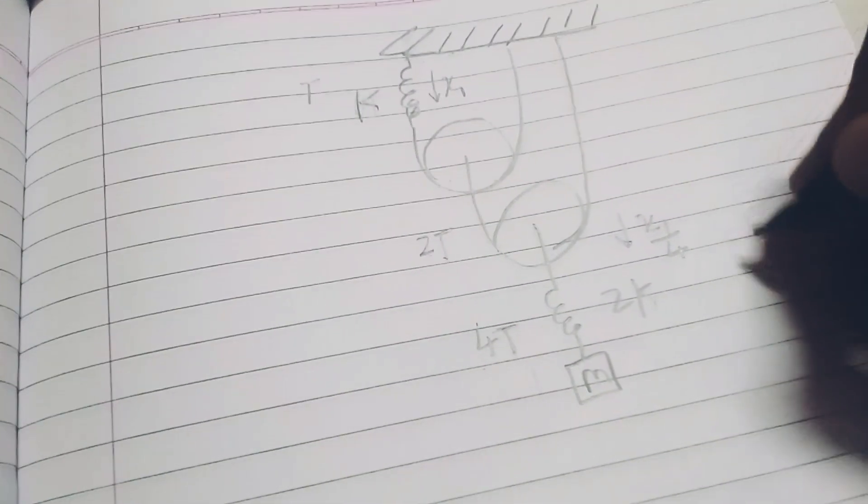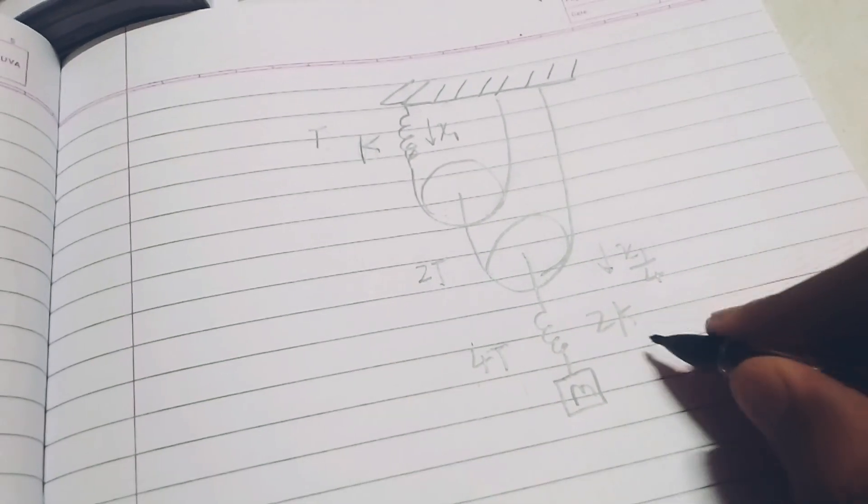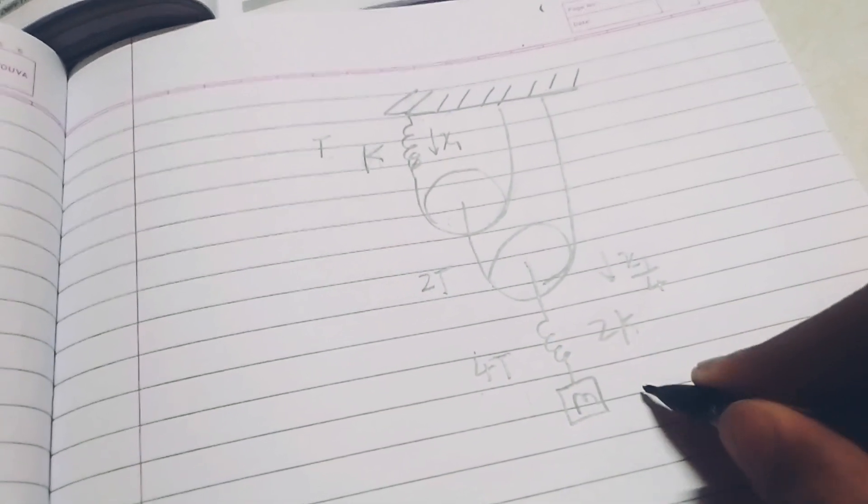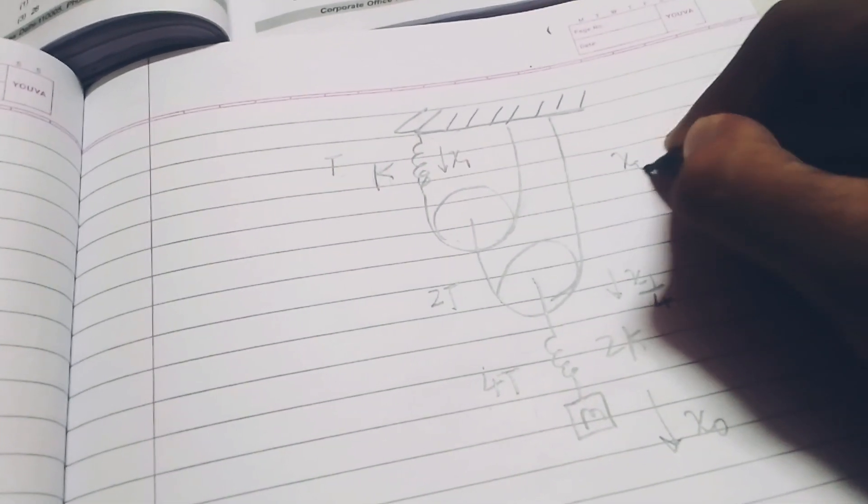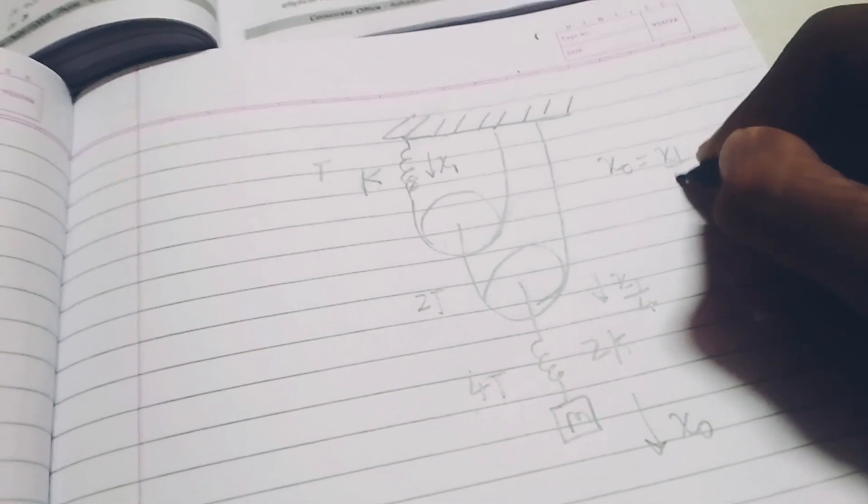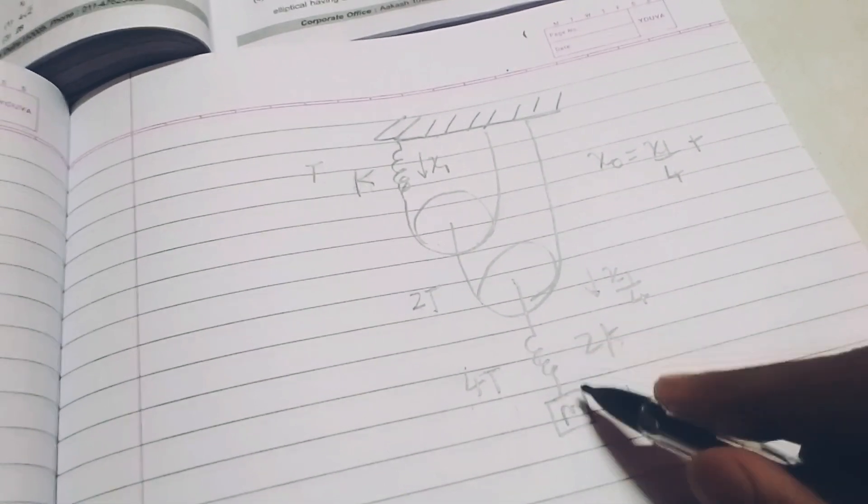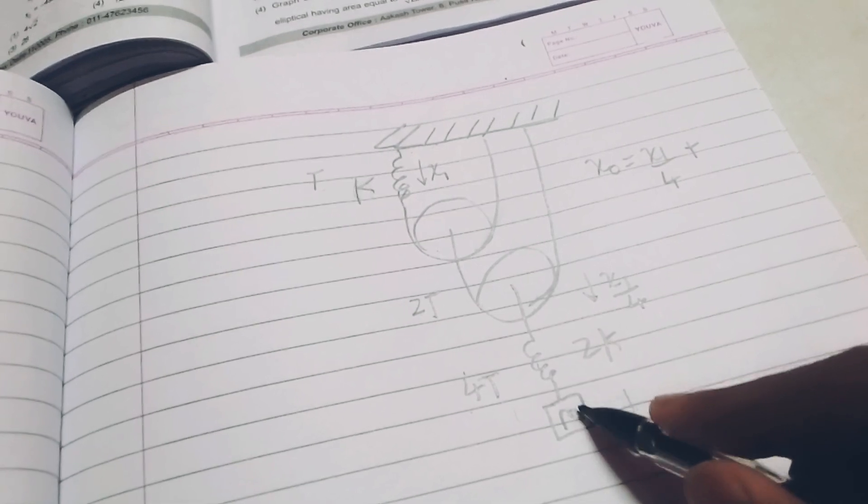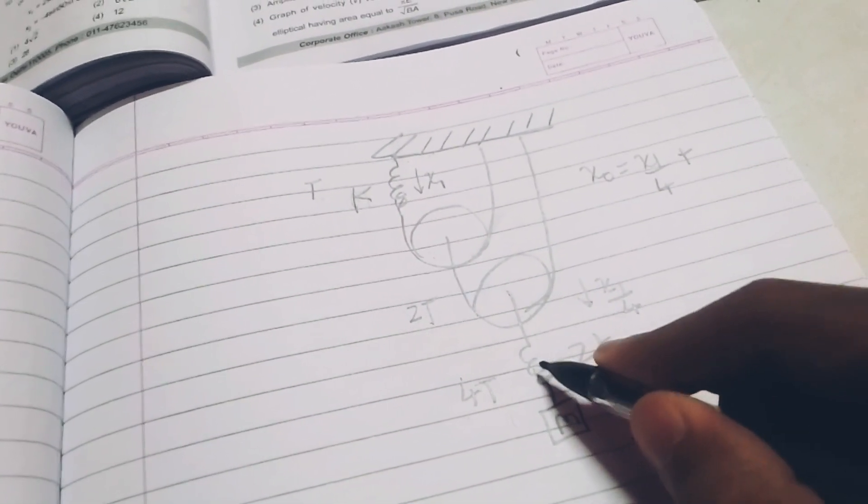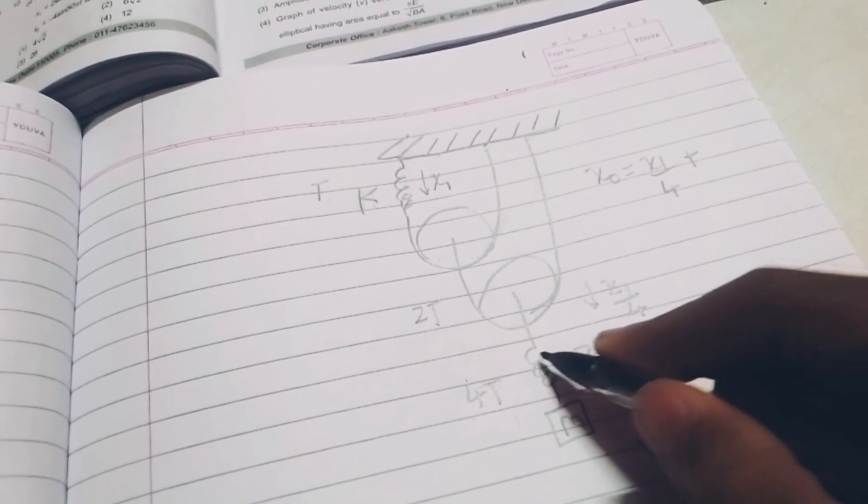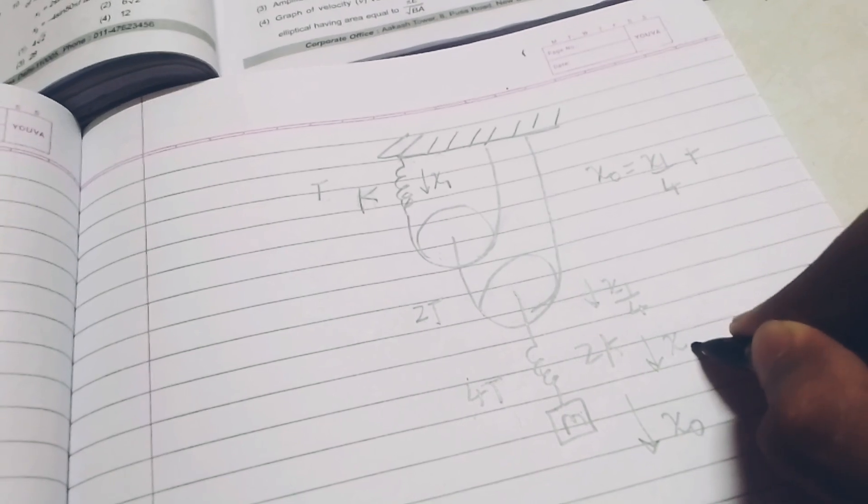Now, looking at the diagram I will also assume that this m mass is coming down by x0. So, I have x0 equal to x1 by 4 plus this spring is also coming down due to the force applied by mg. I will suppose that this spring comes down by x2.